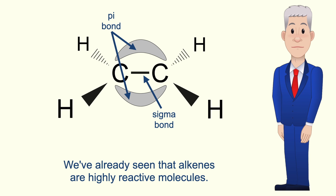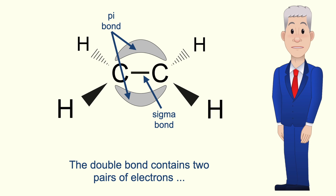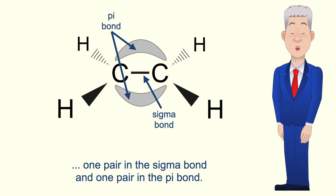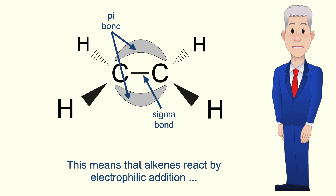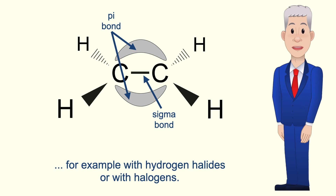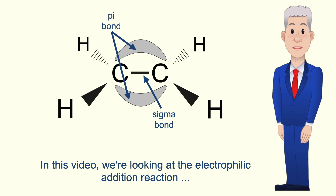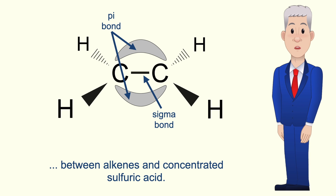We've already seen that alkenes are highly reactive molecules. The double bond contains two pairs of electrons: one pair in the sigma bond and one pair in the pi bond. Because of this, the double bond is a region of high electron density, and this means that alkenes react by electrophilic addition, for example with hydrogen halides or with halogens.